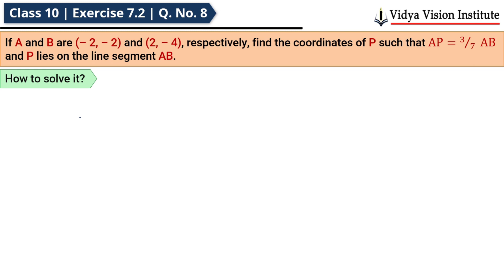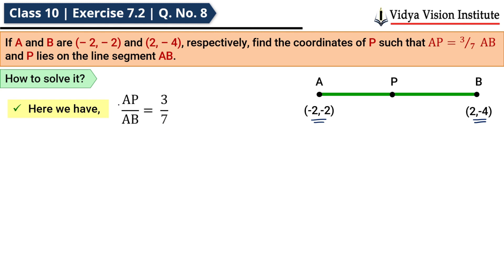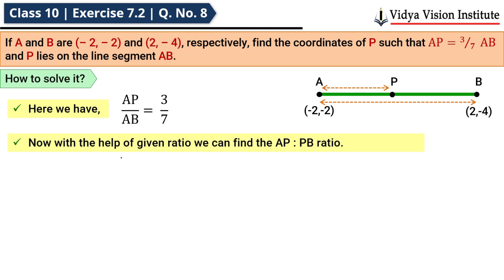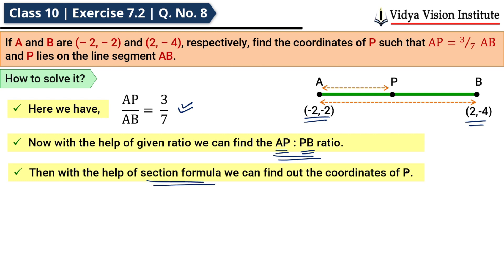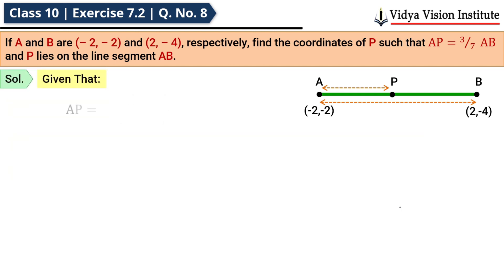This is a slightly tricky but interesting question. Point A is (-2, -2), point B is (2, -4), and this is the line segment AB. There is a point P on this line segment such that AP upon AB = 3/7. Note that we are given the ratio of AP to AB — not the ratio of AP to PB. So first, we will find the ratio AP:PB from this given ratio, and then use the section formula to find the coordinates of P.